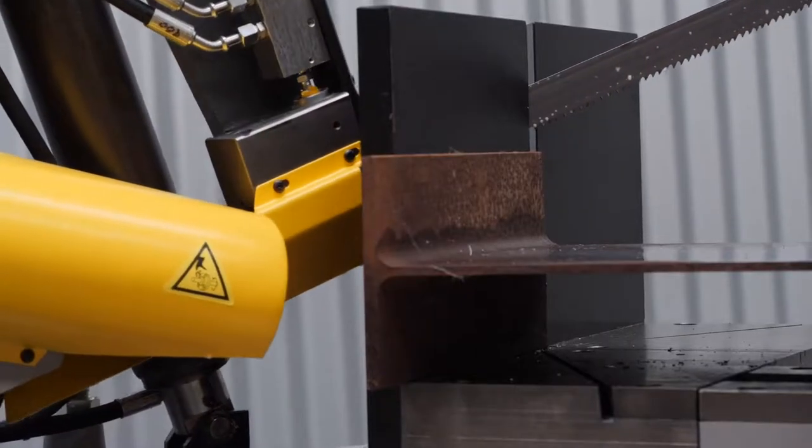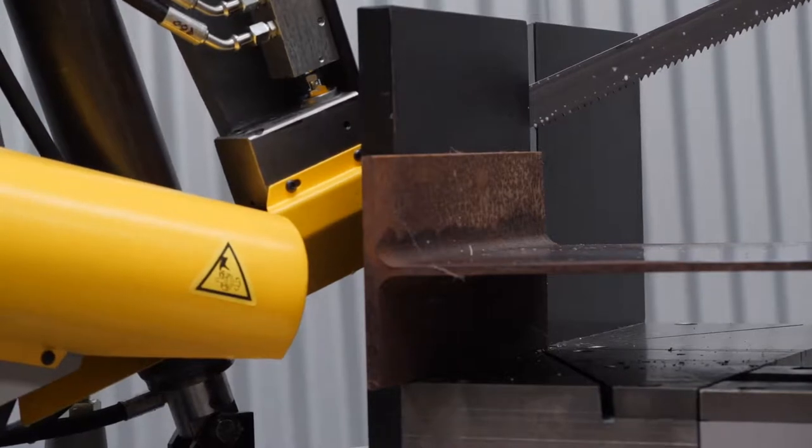Right, let's go over some of the features. For mitre cutting the machine can be easily swiveled 60 degrees in either direction.